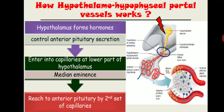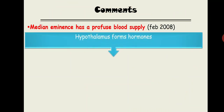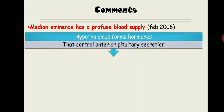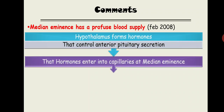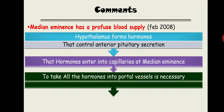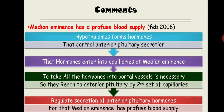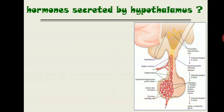One important point: the median eminence has a profuse blood supply. This is because the hormones secreted from the hypothalamus must enter the first set of capillaries at the median eminence, travel via portal vessels, and reach the anterior pituitary through the second set of capillaries to regulate its secretion. That is why the median eminence requires a profuse blood supply.